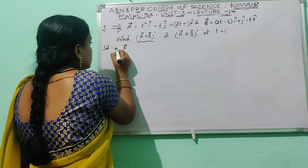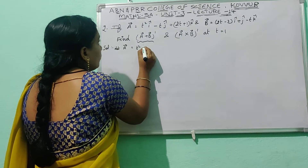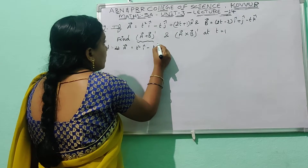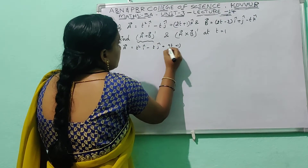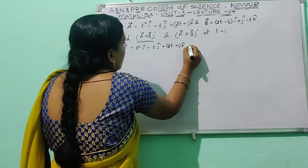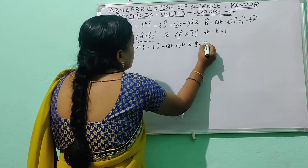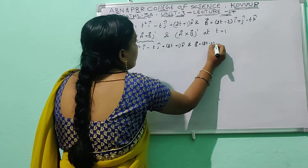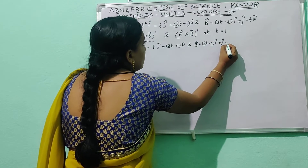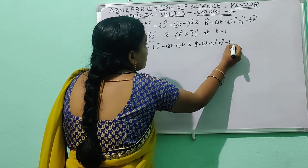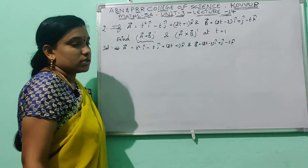Let ā = t² î − t ĵ + (2t+1) k̂, and b̄ = (2t−3) î + ĵ − t k̂. So ā and b̄ are two vectors.